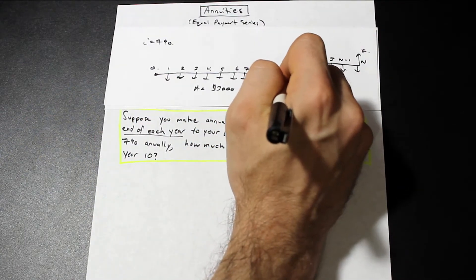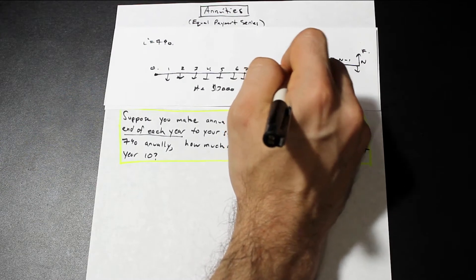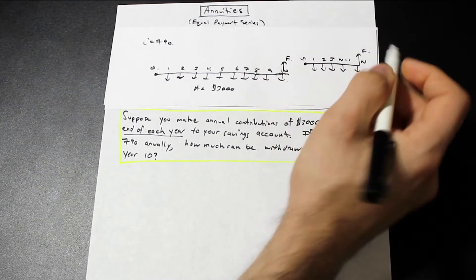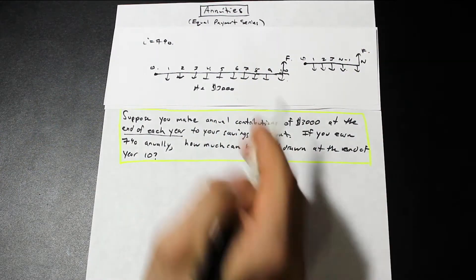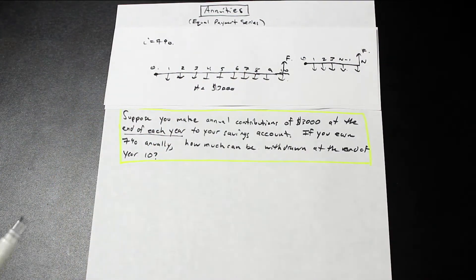And then at year n, we get the future value, so this is at year n, I'll just put that in the middle, and that's our F, so we have our F here, we're at year 0, and we want to find that, cool.